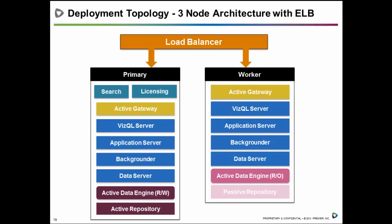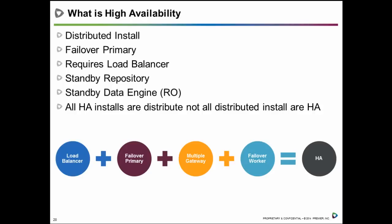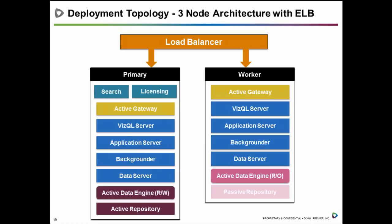For a fully highly available environment, the server topology must have a distributed install, a load balancer, a standby repository, a standby data engine, and — most importantly — a failover primary. The failover primary is best called a backup primary rather than a failover primary because the process is manual, not automatic. The primary is an administrative node and I prefer calling it that rather than 'primary,' to avoid confusion with the primary repository concept.